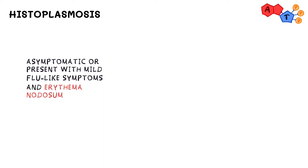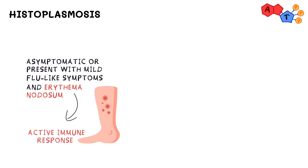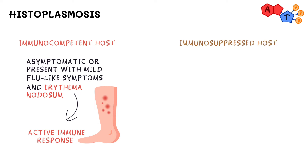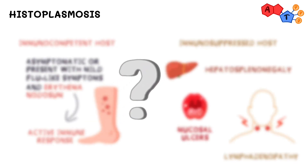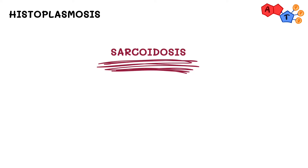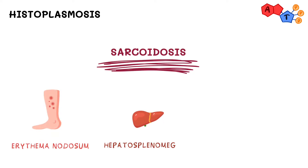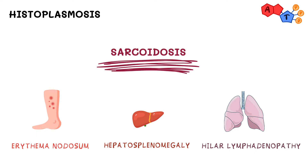Most people infected remain asymptomatic or present with mild flu-like symptoms and erythema nodosum, which are painful tender nodules on the shins. Erythema nodosum represents an active immune response, so it mainly presents in immunocompetent patients. However, in an immunosuppressed individual, histoplasmosis can disseminate and present with hepatosplenomegaly, ulcers of the mucosal surfaces, and lymphadenopathy. This overlaps with sarcoidosis, which can also present with erythema nodosum, hepatosplenomegaly, and hilar lymphadenopathy.